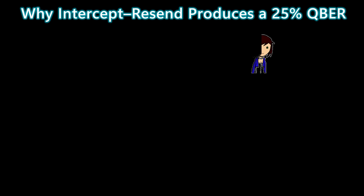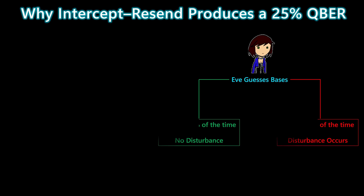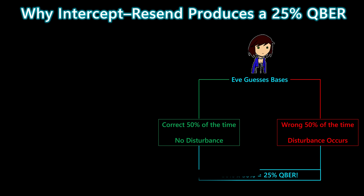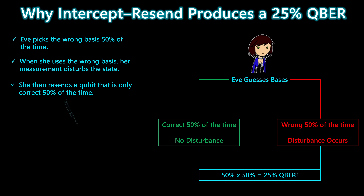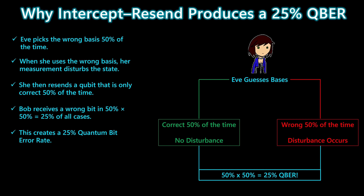Now let's see why this attack creates a 25% error rate. Eve guesses the basis correctly half the time. But the other half of the time she chooses the wrong basis, and whenever she measures in the wrong basis, she sends Bob a state that's only correct half the time. So the total error rate is 50% times 50%, which equals 25%. That's the signature of the intercept-resend attack.